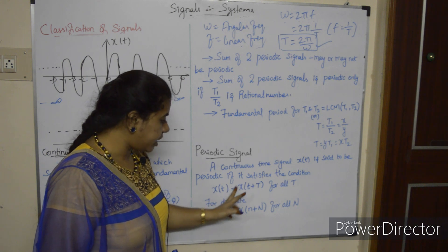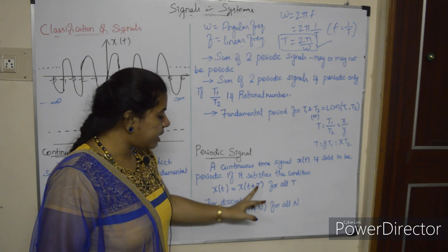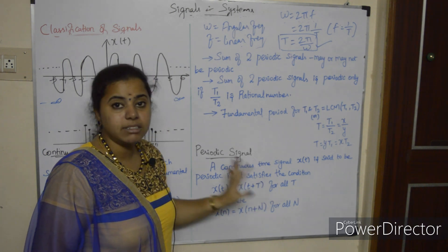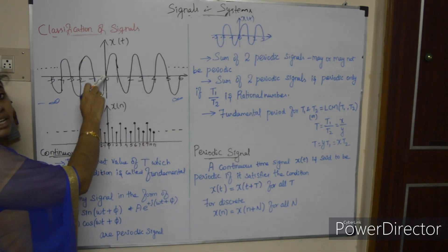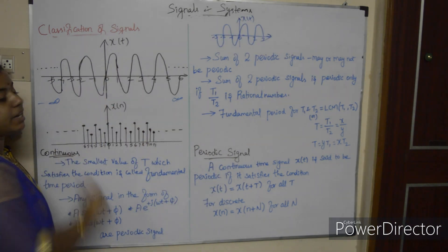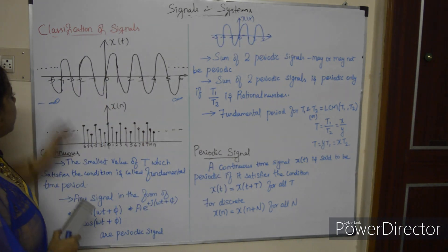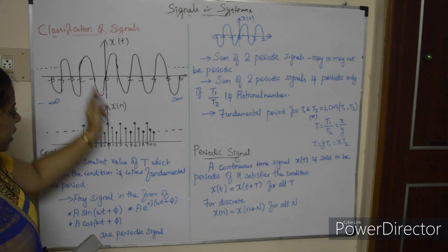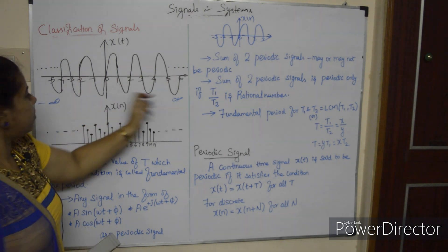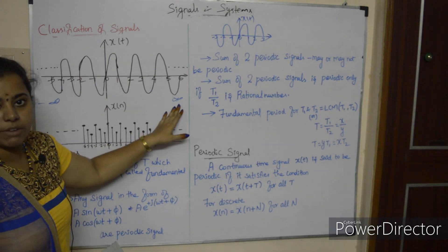If the signal does not satisfy x(t) = x(t + T), then that is a non-periodic signal. This sinusoidal signal, extending from minus infinity to infinity, is an example of a periodic signal.